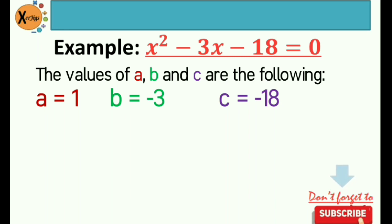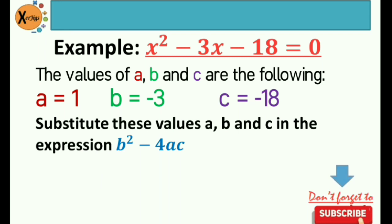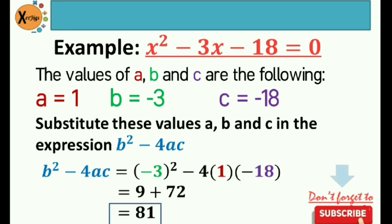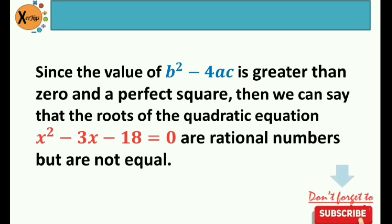After getting those values, substitute them into b squared minus 4ac. That would be negative 3 squared minus 4 times 1 times negative 18. Negative 3 squared is positive 9. Negative 4 times 1 is negative 4, times negative 18 is positive 72. The sum of 9 and 72 is 81. And 81 is a perfect square and greater than 0, so the roots of x squared minus 3x minus 18 equals 0 are rational numbers but not equal.